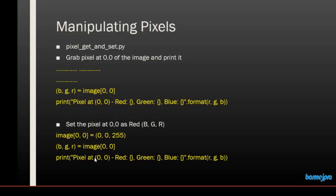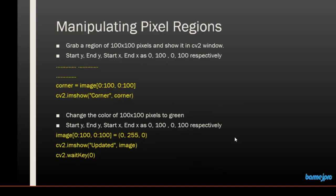We will print the pixel again for confirmation after setting it, so the first print shows the original value and the second print shows pixel at 0,0 with red as 255 and the other two as zero. In this example we will also manipulate pixel regions, not just single pixels. Here we are trying to manipulate a pixel region where we specify an area of pixels inside the image. For example, here we are specifying a region of the image called 'corner'.